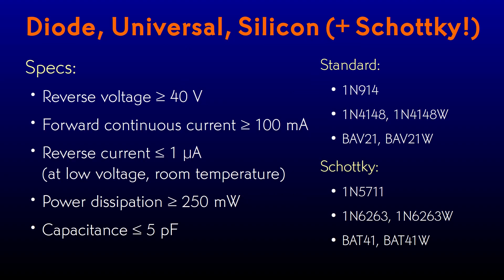Starting with the diodes, the vast majority of the ones that I use can have fairly loose specs. A 40-volt reverse voltage gives plenty of margin for the 24 or 30-volt split supplies that I usually use in analog circuits. A hundred milliamps of forward current is plenty. I like to hold the leakage current under a microamp so I don't have to worry that peak detectors, integrators, and the like will have their voltages droop. A quarter watt of power dissipation is what you can get in a package sized for a typical small diode. And I like to have the capacitance under 5 pF, particularly in radio circuits. The classic 1N914, the 1N4148 — which is often the exact same diode — and the BAV21 all fall in this category.